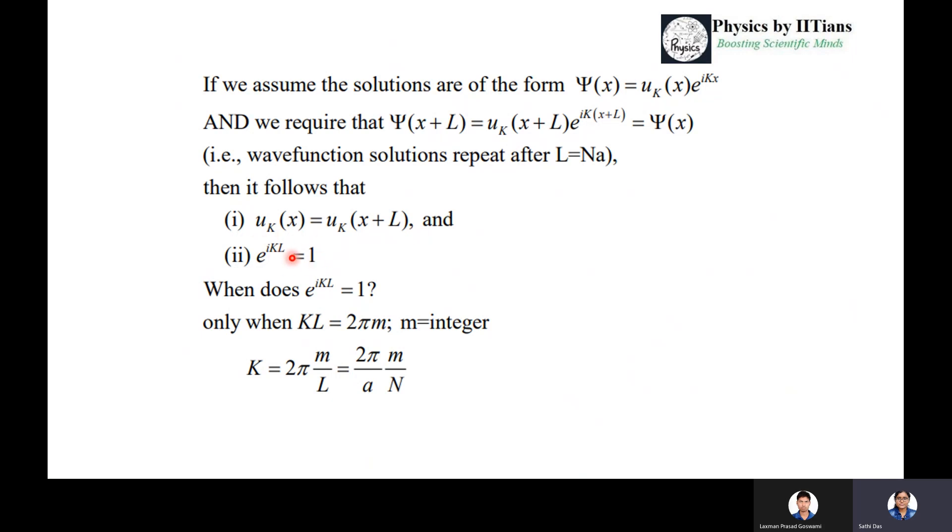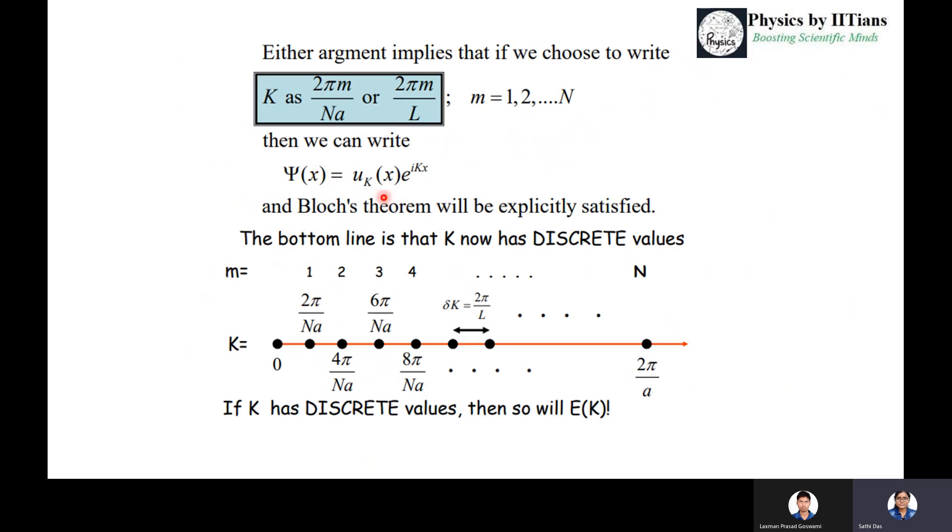Now e^(ikl) will be 1 only when kl equals 2mπ, where m is an integer. So k will take discrete values like 2πm/l, or we can write it as (2π/a)(m/N). So we write the wave function ψ(x) equals u_k(x)e^(ikx), and we take these k values as discrete values 2πm/l, where m can have values of 1, 2, 3 up to N values of integer. So k has discrete values.